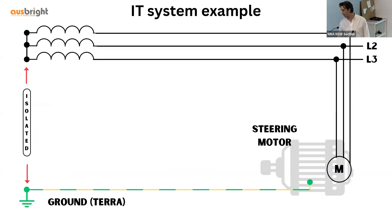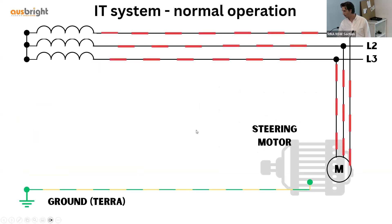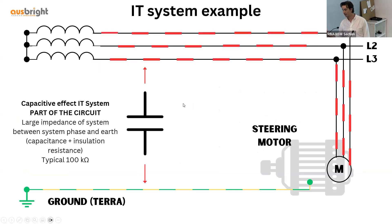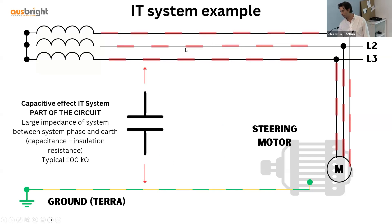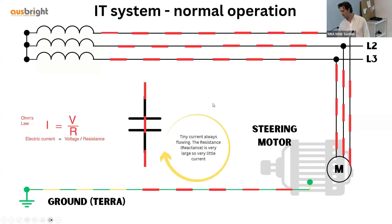Stepping through an IT system example, here we have a steering motor isolated from ground as you would find on a vessel. In normal operation, currents are flowing with no problems. One important thing to remember with IT systems is the capacitive effect — there is current continually flowing through the capacitor and insulation resistance. It is a very large resistance, unlike your cables, so always there is a tiny current flowing. Very large resistance, very small current.